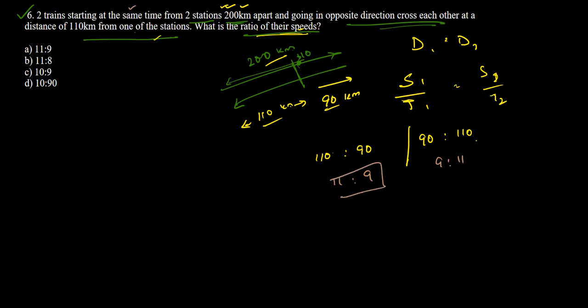The possible answers are 11 to 9 or 9 to 11. Looking at the options, option A says 11 is to 9, so 11 to 9 is the correct answer. I would like to end this video here. You will find more solutions to placement papers of such companies in our further videos.